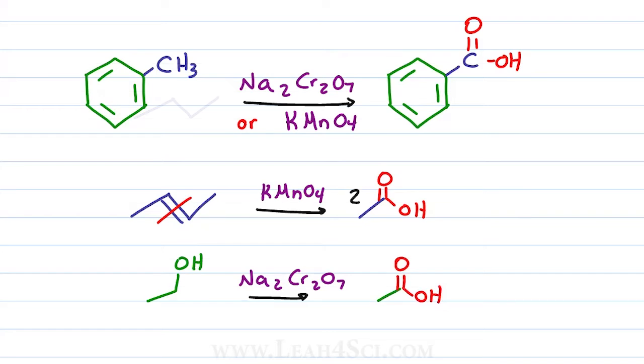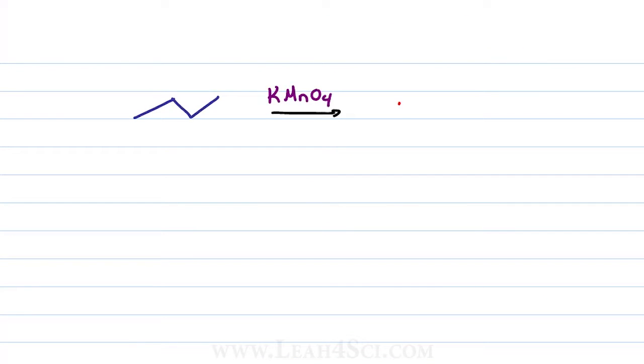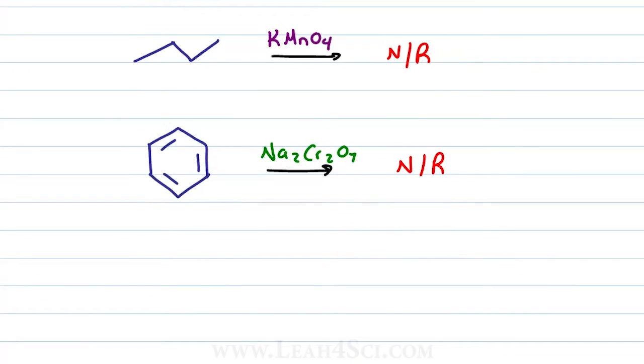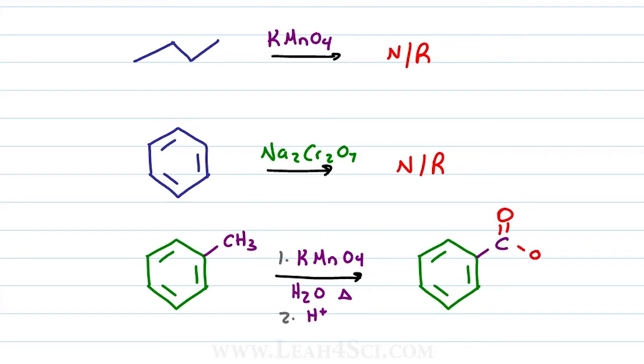But what if I expose an alkane to a strong oxidizing agent? My product, no reaction. What if I expose benzene to a strong oxidizing agent? Once again, no reaction. But if I put them together and have an alkyl group on benzene, the same reagents that individually gave us no reaction gives us a fully oxidized side chain oxidizing the methyl group all the way to a carboxylic acid.